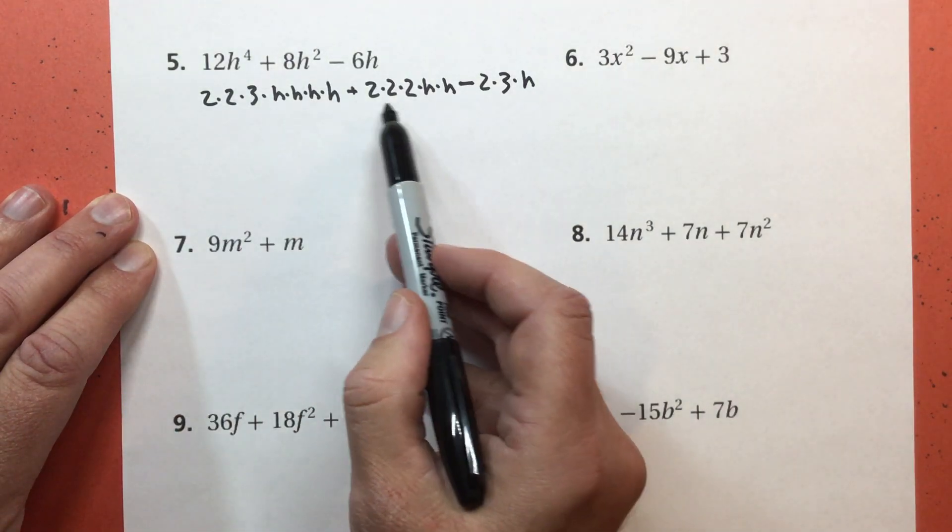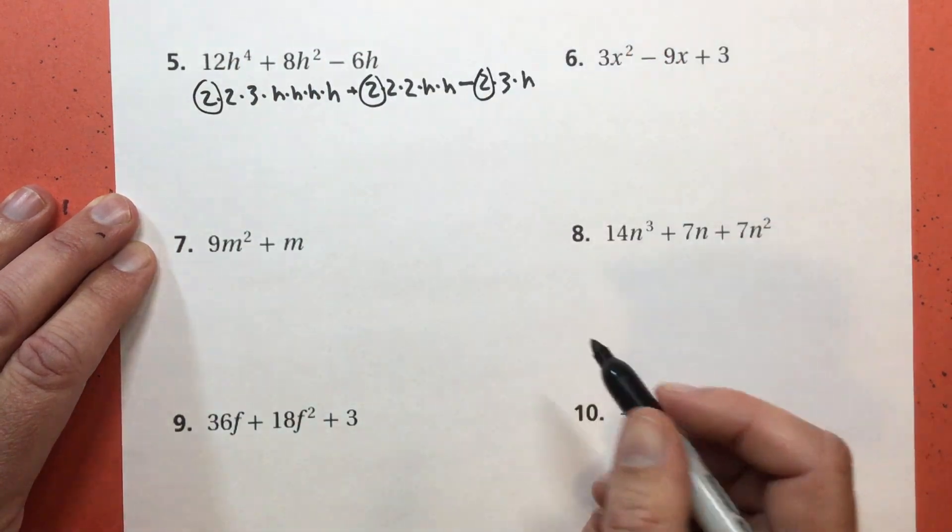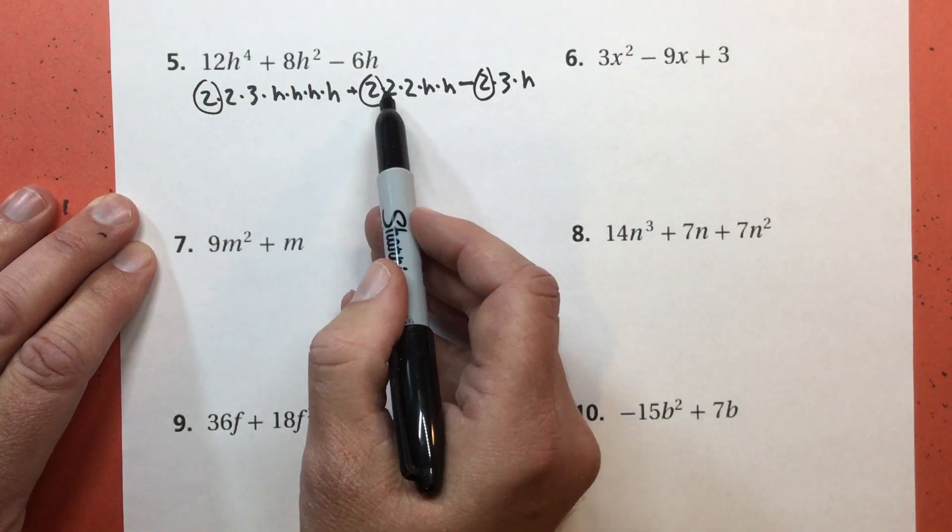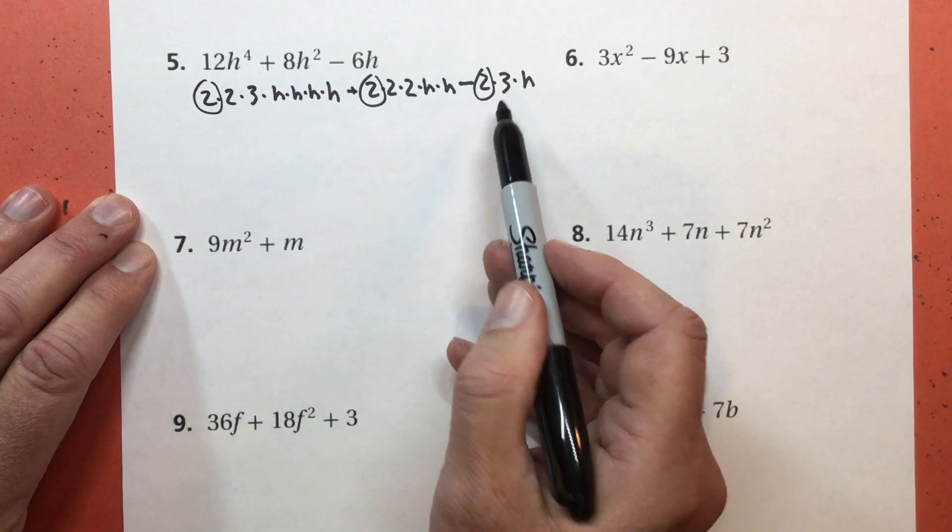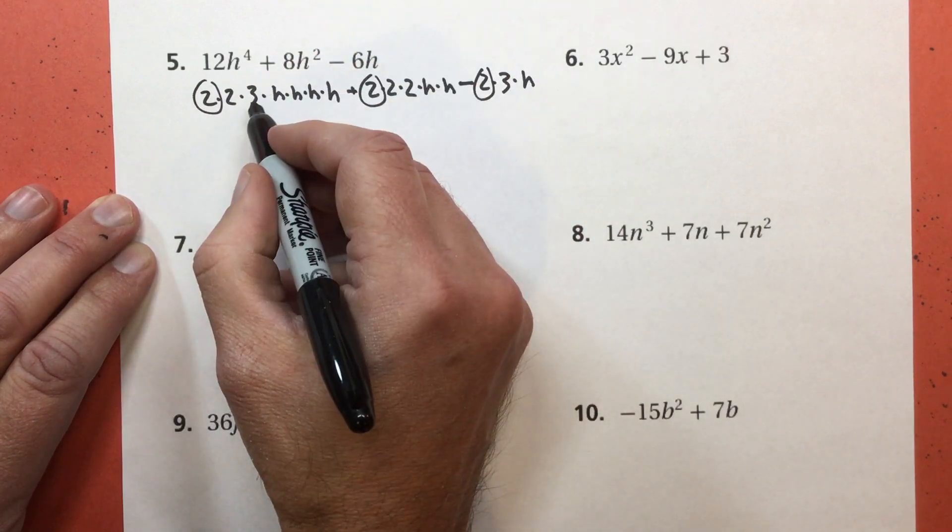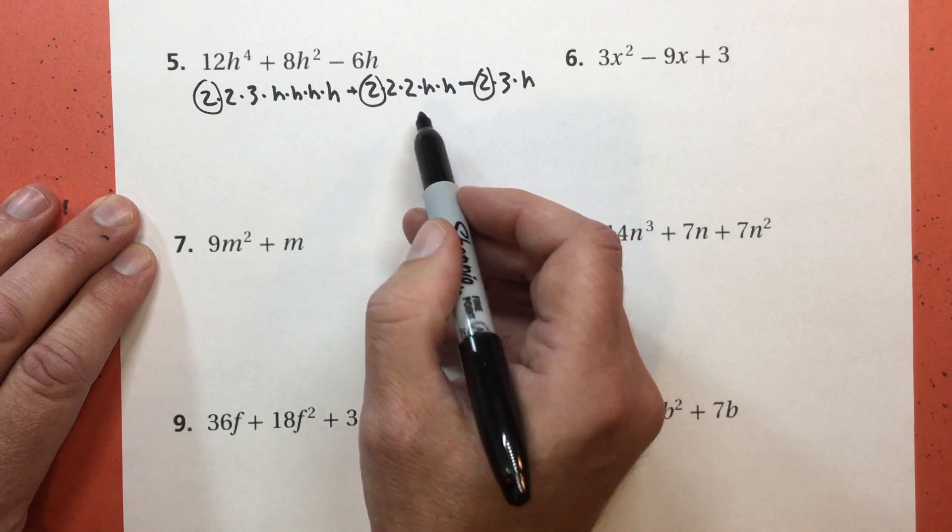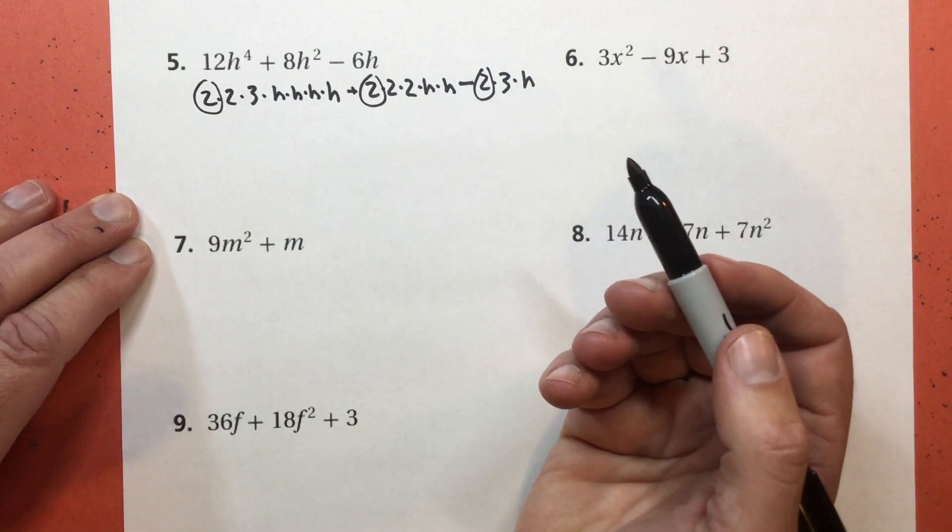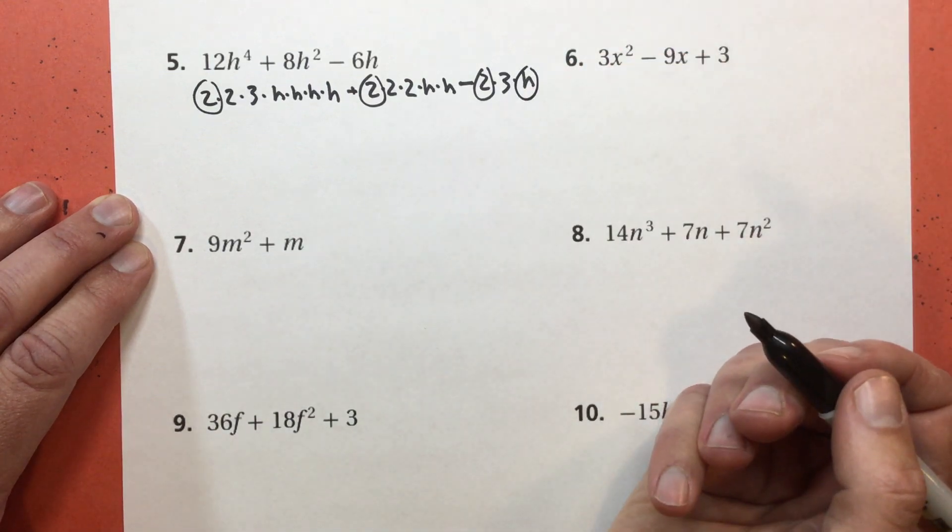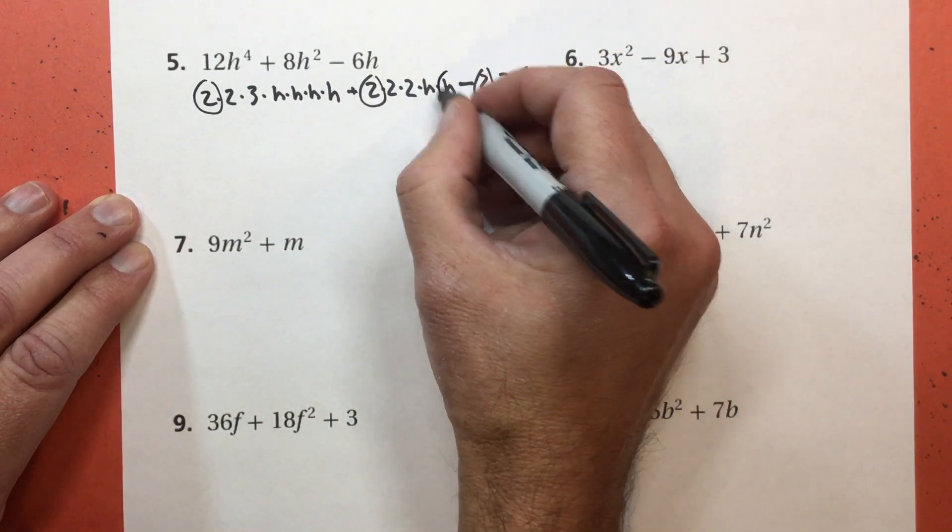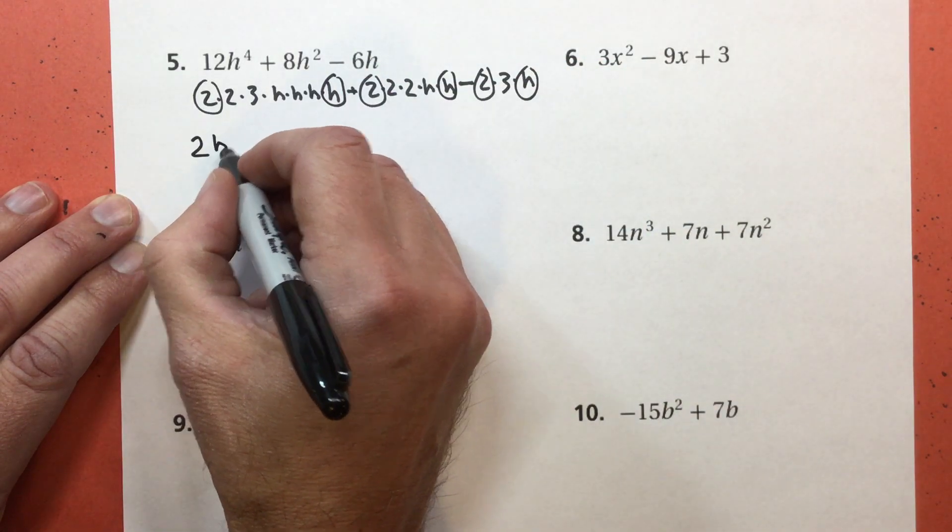So what's here that's also here that's also here? They all have a 2. Now there's more 2s here and more 2s here. But that's it. It has to be in all 3. There's no more 2s over here. There is, however, a 3 here and a 3 here. But there's no 3s here. It has to be in all of them. Okay. So the common factor is 2. What about the variables? Well, I have only one H that I can pull out of here. So that means I'm going to pull that one and pull that one. So my common factor is just 2H.